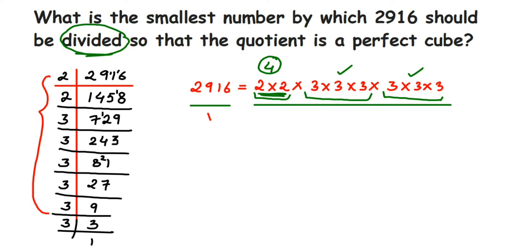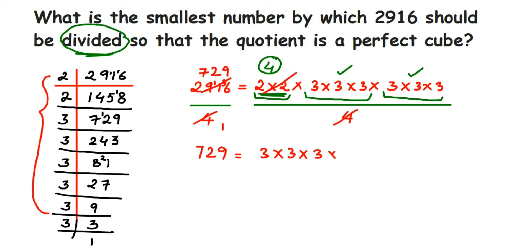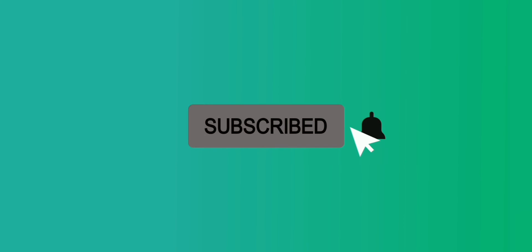So we divide both sides by 4. When you divide 2916 by 4, on the right-hand side the two 2s cancel out, leaving 3 × 3 × 3 × 3 × 3 × 3. Dividing 2916 by 4 gives us 729. So 729 equals 3 × 3 × 3 × 3 × 3 × 3, which forms proper sets of 3 — meaning 729 is a perfect cube. The answer is that we divide by 4. I hope this question is clear; if you have further questions, drop a comment.